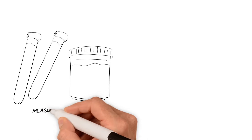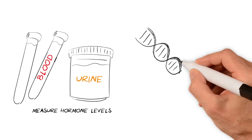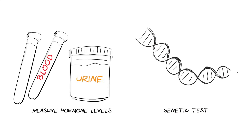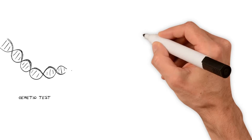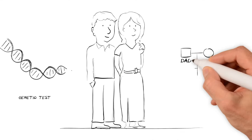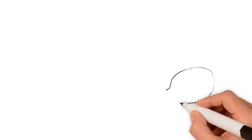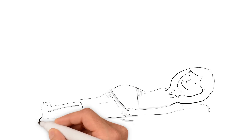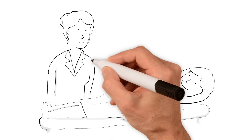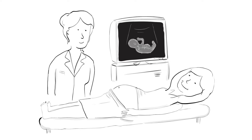CAH can be diagnosed in many ways: through measuring hormone levels in the blood or urine, or by genetic testing. For those with a known family history of CAH, genetic testing is available to find out if you are a carrier of a faulty CAH gene. This may be important for parents thinking about having children, and genetic counselling can be helpful. Babies can even be tested before birth while in the womb.